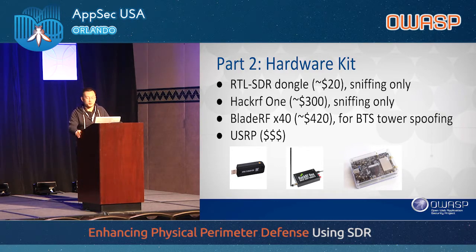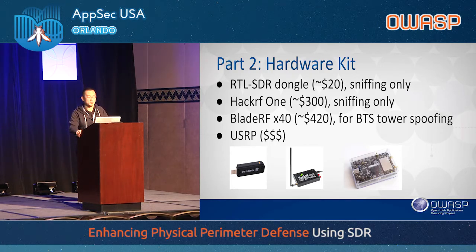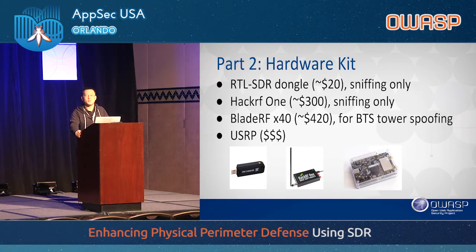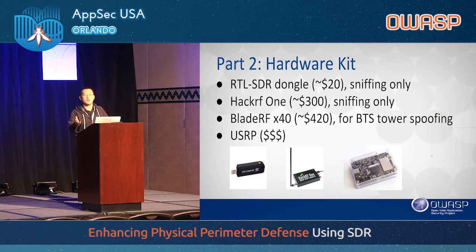BladeRF is probably your cheapest choice if you want to be a BTS — a cell phone tower. Then USRP is a different type of device that allows connection between the device and the host machine using an Ethernet connection, so there won't be bandwidth problems, but it costs way more.